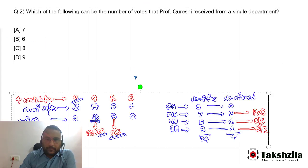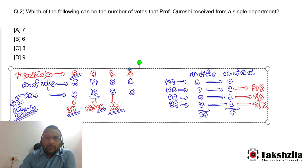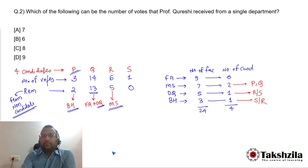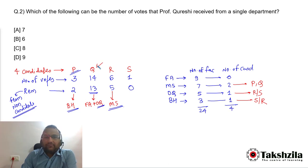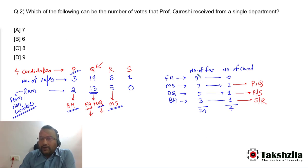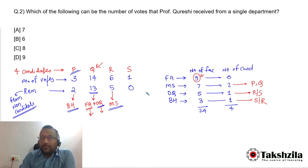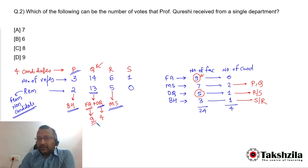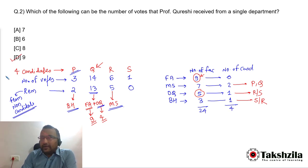Question 2: Which of the following can be the number of votes that Professor Q received from a single department? Professor Q received votes from F&A (all 9 non-candidate faculty members) and from O&Q (4 non-candidate faculty members). So Q received 9 votes from F&A and 4 votes from O&Q. The answer is 9.